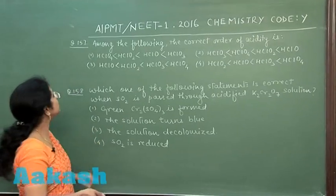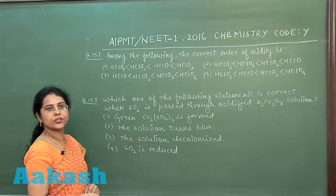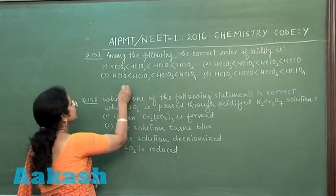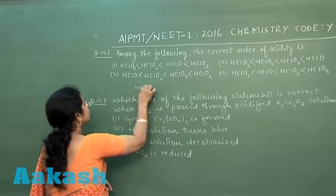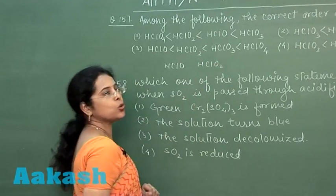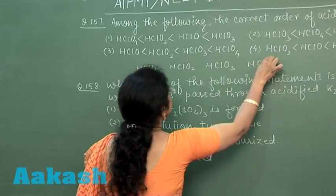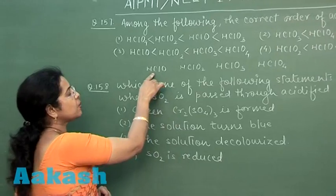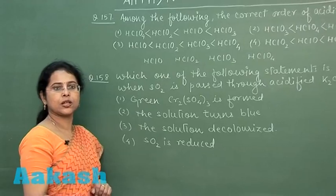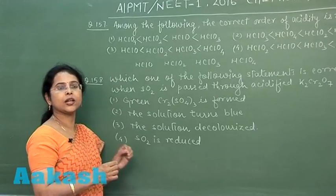Moving to the next question, question number 157: among the following, the correct order of acidity is—four options are given and we have to find out the correct order. Here the acids given are chlorine oxo acids: one is HClO, another is HClO2, another is HClO3, and fourth is HClO4. This is hypochlorous acid, chlorous acid, chloric acid, and perchloric acid.